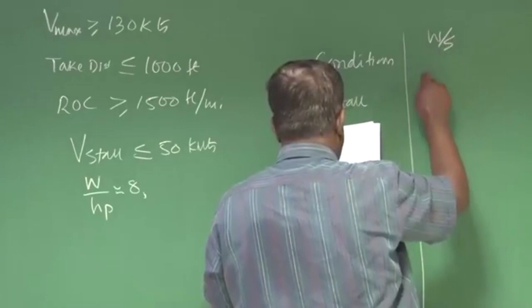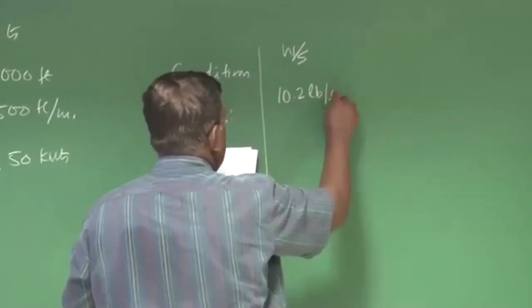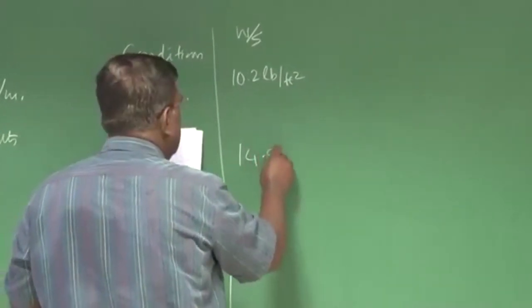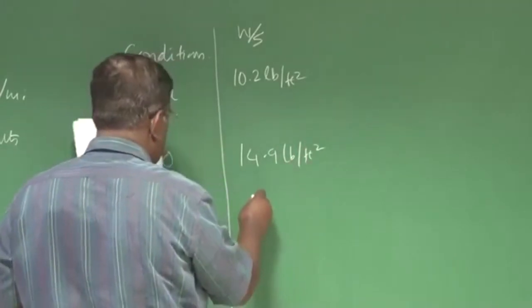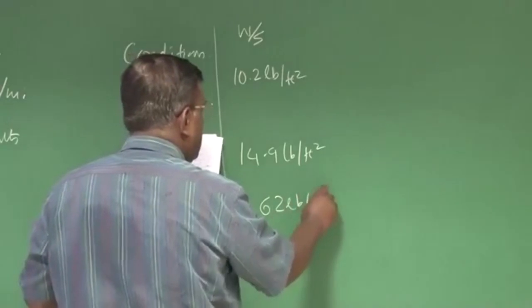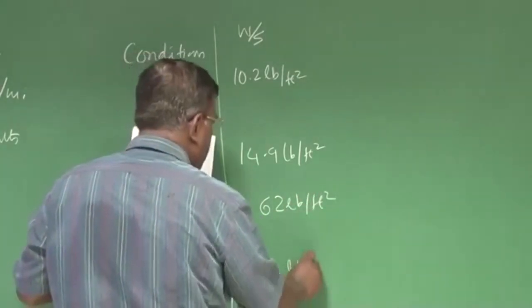And we got W by S for stall as 10.2 pound per feet square, takeoff is 14.9 pound per feet square. Climb, it was 62 pound per feet square, and cruise was 20 pound per feet square.